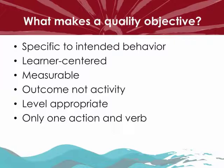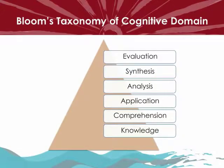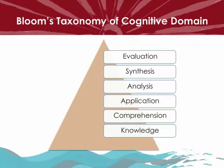Now let's discuss a taxonomy you can use to help create quality objectives. Bloom's Taxonomy of Cognitive Domain provides a framework for crafting various levels of objectives, moving from the lowest order processes to the highest: Knowledge, Comprehension, Application, Analysis, Synthesis, Evaluation. Please note, for those familiar with this taxonomy, the so-called old domain is used in this presentation. The new domain includes: Remember, Understand, Apply, Analyze, Evaluate, Create.